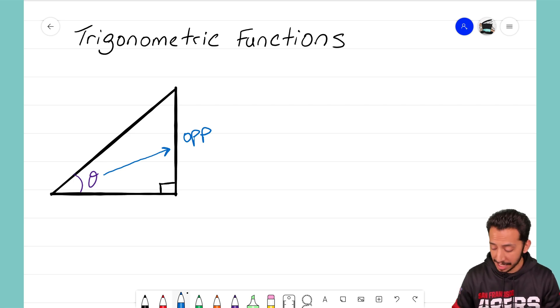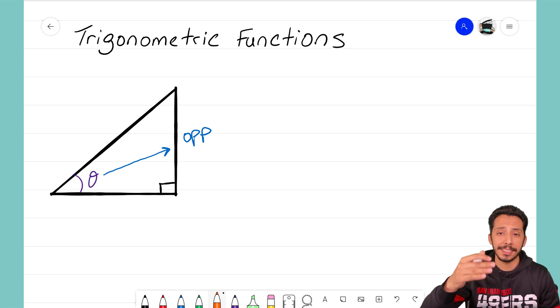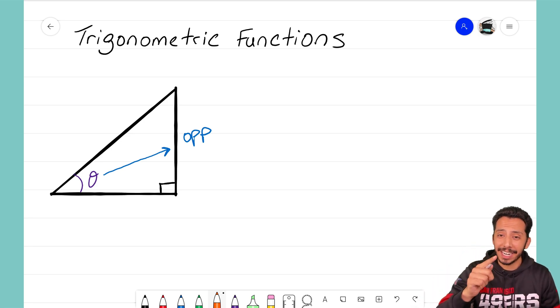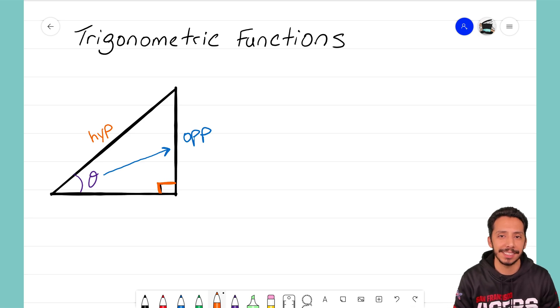The next side that I always label second is the hypotenuse. The hypotenuse—just a quick reminder—in a right triangle is that diagonal side. It's also the side that is the longest in a right triangle. Another fact that I use to help me identify it is that the hypotenuse is always across from your right angle. So I always trace my right angle; the right angle is actually pointing you in the direction of where your hypotenuse is. I'm going to label it or abbreviate it as HYP.